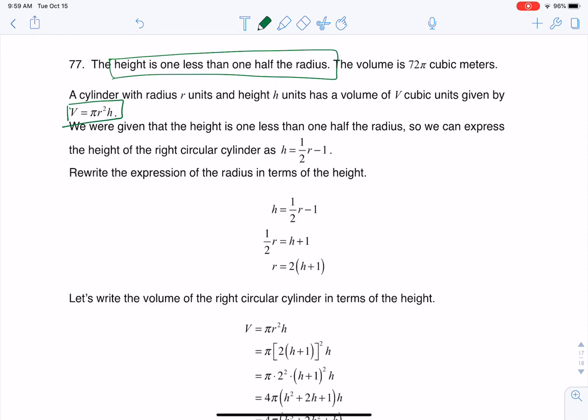So it says the height is, right, so we get h is equal to one less. So when I see the one less, that's going to be a subtraction. And then half of the radius. So I need to take half of the radius and subtract one. That is going to be my formula for my height.